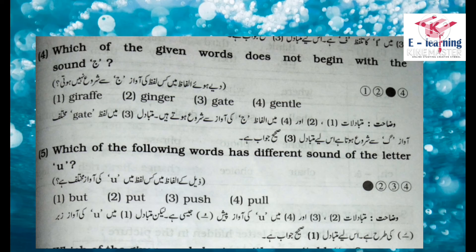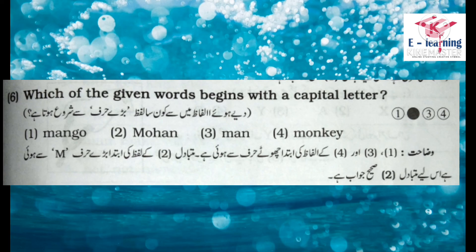Question number 5: Which of the following words has a different sound of the letter U? ذیل کے الفاظ میں کس لفظ میں U کی آواز مختلف ہے؟ Explanation: متبادل تین اور چار میں U کی آواز 'pet' جیسی ہے، لیکن متبادل ایک میں U کی آواز زبر کی طرح ہے، اس لیے متبادل ایک صحیح جواب ہے۔